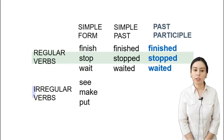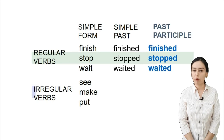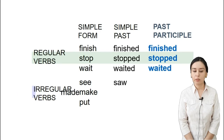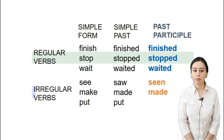Irregular verbs. We selected 'see', 'make', and 'put'. The simple past and past participle forms of irregular verbs are different, because the stem of the verb changes. Past simple forms: 'see' becomes 'saw', 'make' becomes 'made', and 'put' doesn't change — it stays 'put'. Past participle forms: 'seen', 'made', and 'put'.